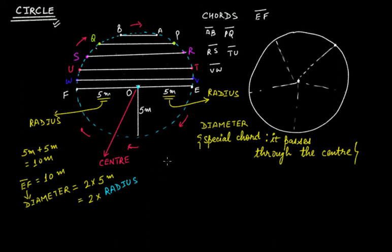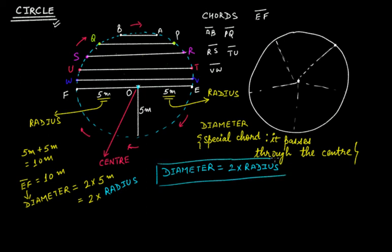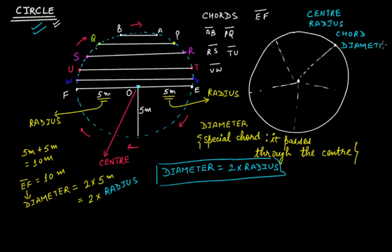So now we know about center, radius, circle, chord, and diameter. Most importantly, we have seen the relation between diameter and radius: diameter is nothing but twice the length of the radius. This is a very important formula to remember.